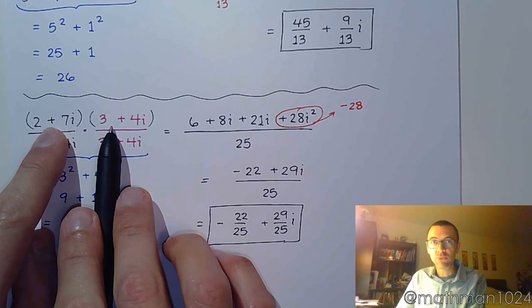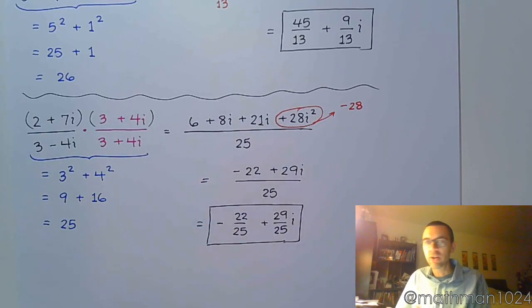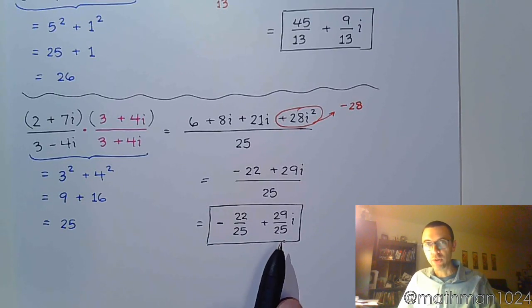If you need to, you can always take this product, this FOIL that you need to do, and just take it off to the side, and then you can bring it back in here as the negative 22 over 29i. But at the very end, you want to make sure that you do clearly write your answer. It's the real part, and then the imaginary part.